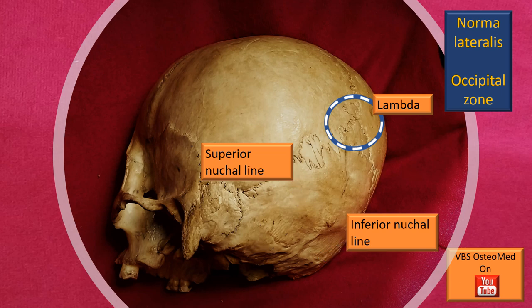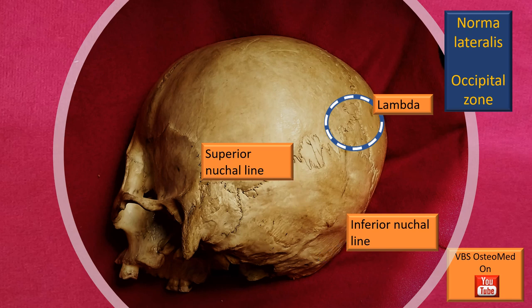Lambda is also the location of the posterior fontanelle, visible immediately after birth for a few months. This is similar to the fontanelle seen at the Asterion, but whereas that is the posterolateral fontanelle, this one is the posterior fontanelle.